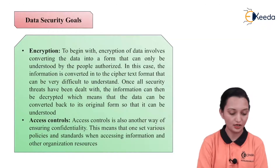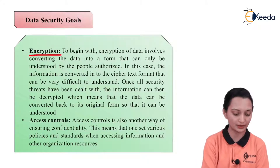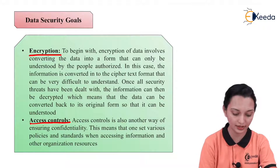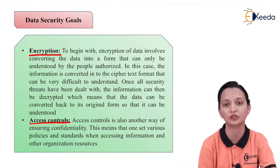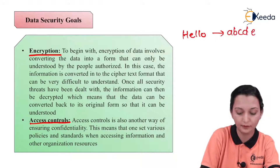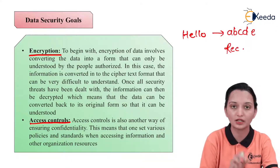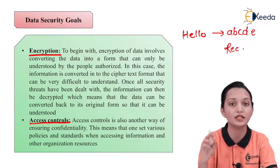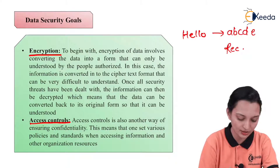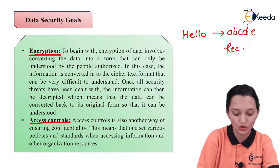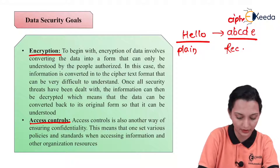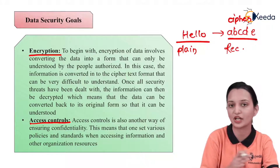In confidentiality we can also include encryption and access control. Encryption involves converting the data into a form that can only be understood by authorized people. For example, if I want to send 'hello' and convert it into A, B, C, D, E, then only the authorized receiver is able to decrypt it. The conversion of encrypted data back through decryption is only accessible to the authorized receiver. The information is converted into ciphertext format that is very difficult to understand — the input message is the plaintext, and the encoded output is the ciphertext. So information is converted into a format which cannot be understood by the third party.